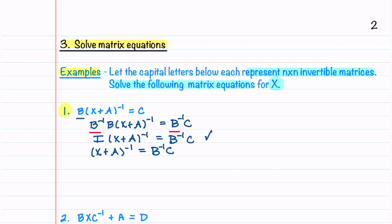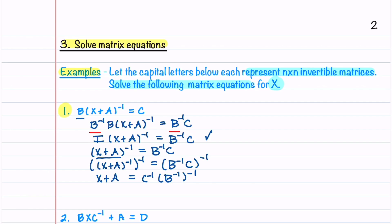You can actually skip the step of writing down I. Now, to isolate X, we're first going to isolate X plus A. To do that, we have to take the inverse of both sides of the equation. On the left, this just gives us X plus A, and on the right, we have to switch the order. So we have C inverse times B inverse inverse. The inverse of an inverse is just the matrix, so this is C inverse B. Now all we have to do is move A to the right-hand side. This gives us X is equal to C inverse B minus A, and that's our final answer.